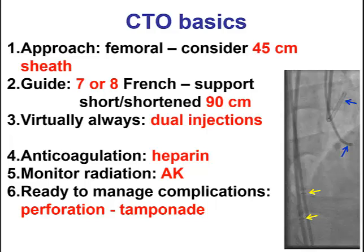It is important to educate the cath lab staff on the basics of CTO intervention — for example, the usual use of bifemoral access, the importance of dual injection, the use of heparin and ACT monitoring every 30 minutes, with goals of 300 or more for antegrade and 350 or more for retrograde, as well as radiation vigilance and readiness to manage potential complications.